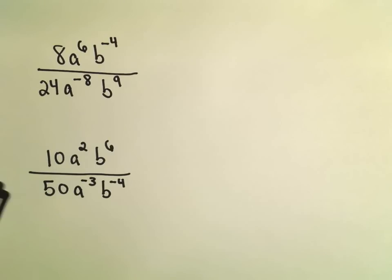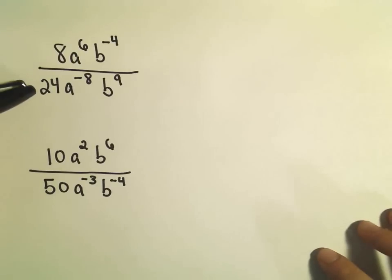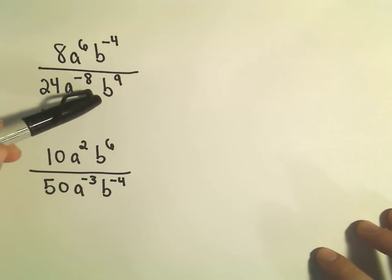So in the first one we have 8a^6b^-4 over 24a^-8b^9.